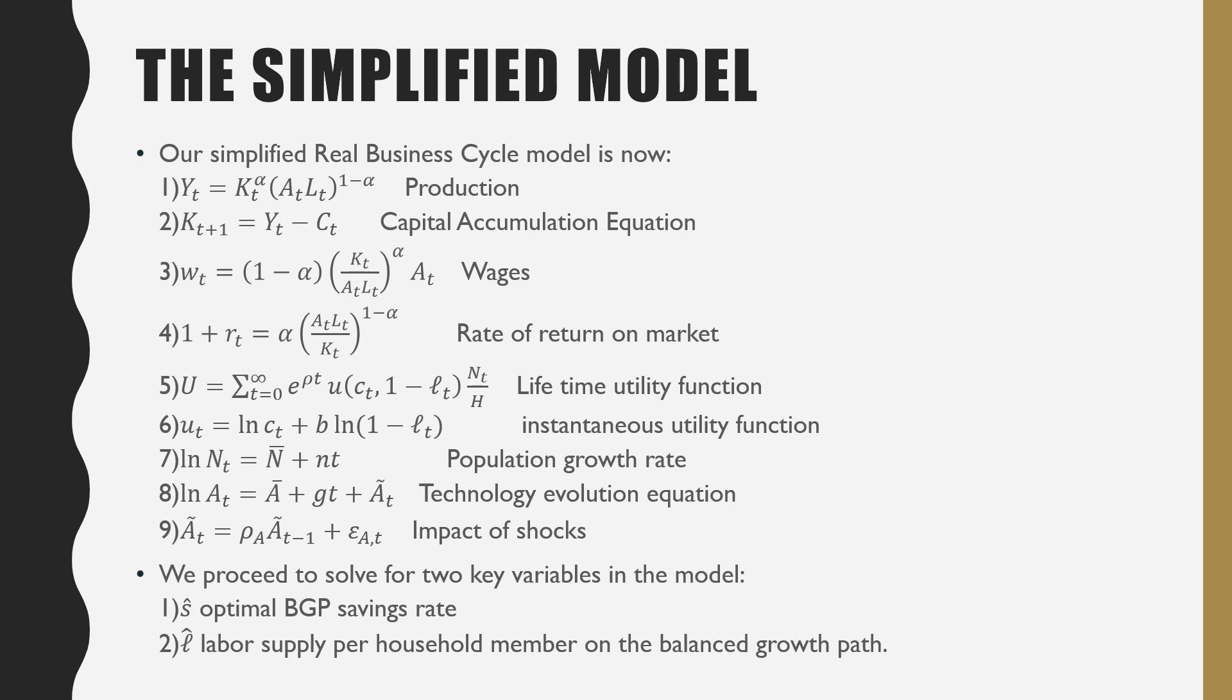Most of them being the same like how we discussed in our previous videos, just that we omitted government and the two different equations that we're having here is equation two and equation four. In equation two, we define our capital accumulation equation, just as the money that's not spent on consumption, that's going to be your capital in period T plus one. And for our rate of return on the market, that's just where we get our rental rate of capital or our marginal product of capital, which is equal to our rental rate. And since our rate of depreciation is equal to one, and remember, in our other model, we would have minus delta over here. We're just bringing that over to the other side. And now we have our rate of return on the market.